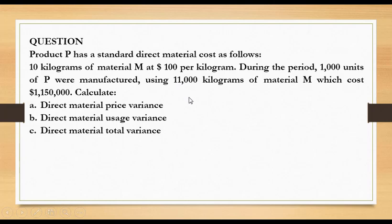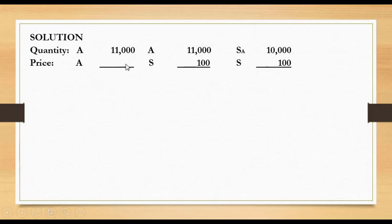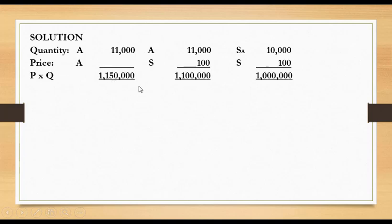Looking at the price section of the proforma: for actual price, we already have the total actual cost so we do not need to compute it separately. The standard price given is $100, repeated in both relevant columns. Multiplying quantity by price gives us cost. We get $1.15 million for actual cost, $1.1 million for actual quantity at standard price, and $1 million for standard quantity at standard price.